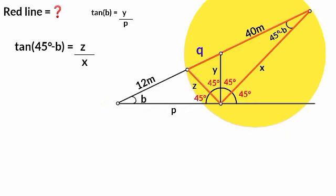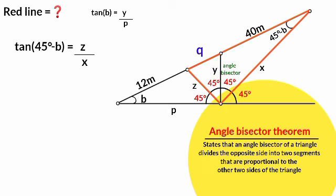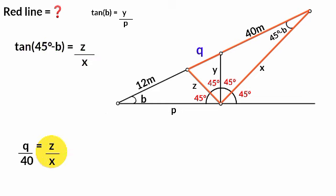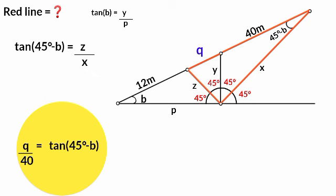Now still on this triangle, we can see this line bisects this angle here — that is, it is an angle bisector of the triangle. By the angle bisector theorem, which states that the angle bisector of a triangle divides the opposite side into two segments in the same ratio as the other two sides, the ratio between Q and 40 meters must equal the ratio between Z and X. So Q over 40 equals Z over X. And since tan(45° − B) equals Z over X, we can write Q over 40 equals tan(45° − B).